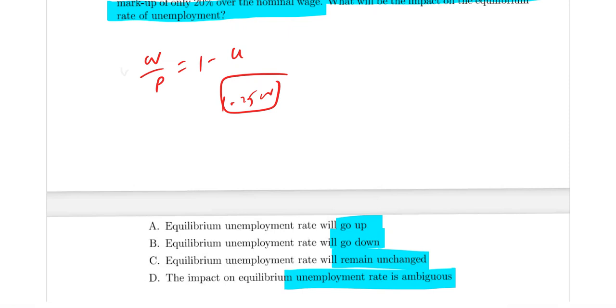Now the market power of the monopolist firm decreases, so it only charges a markup of 20%. Therefore P equals 1.2W.